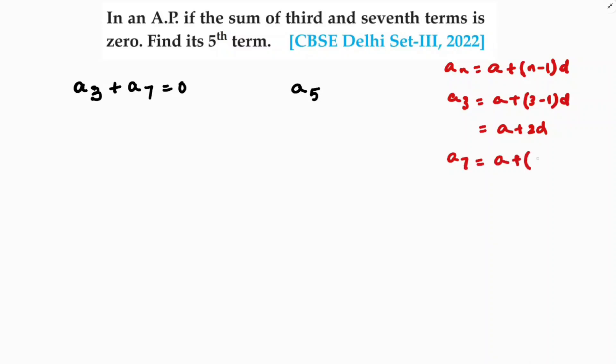So a7, a plus 7 minus 1 into d, which is a plus 6d.